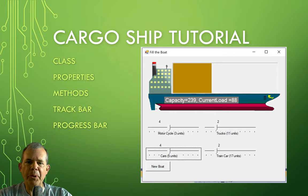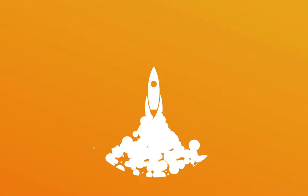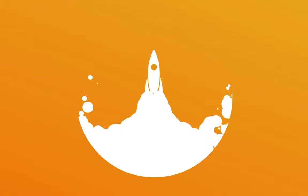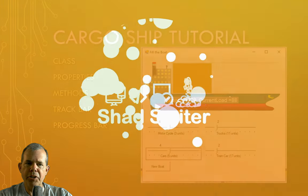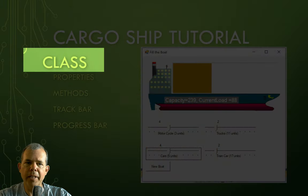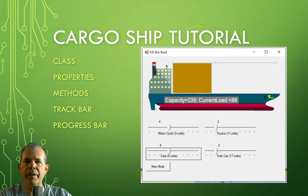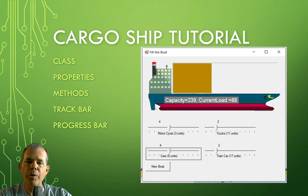Welcome to a C# programming tutorial. We're going to start on a project called the Cargo Ship. In this tutorial, we're going to learn several things about object-oriented programming. The agenda includes classes — we're going to create a class that will have methods and properties, as an introduction to object-oriented programming. We're also going to use some controls in a graphical user interface, including a progress bar and four track bars.